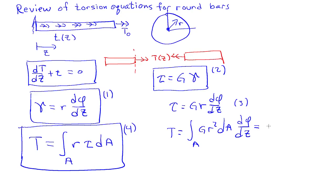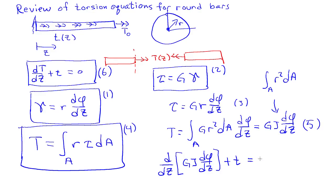And if g is a constant, then I can write this as gj d phi dz, where j is the polar moment of inertia, namely the integral over the cross section of r squared dA. So I can take now relationship 5 here, and I can substitute that into relationship 6, and I recover a single equation d/dz of gj d phi dz plus the distributed torque t equals 0.